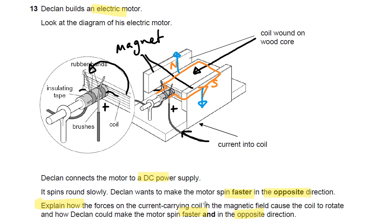How do you make it faster? We make it faster by doing one of four things. We can have a stronger magnetic field, or stronger magnets. We can have a higher current. We can also have more coils, or more turns on the coil.